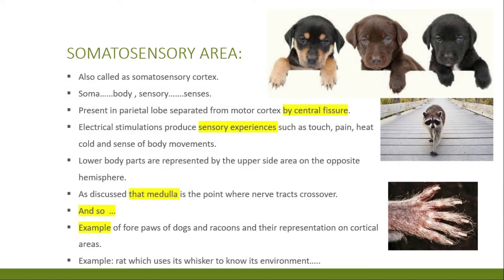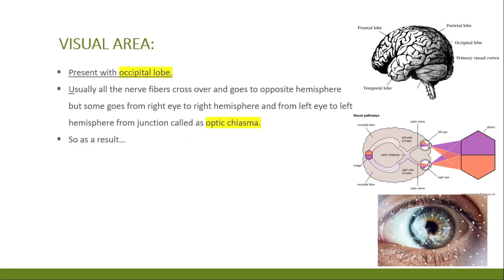In an experiment, rats used sensitive whiskers and these were represented in a separate cortical area. This demonstrates that if you use a body part more, it will have more representation in the cortical area.